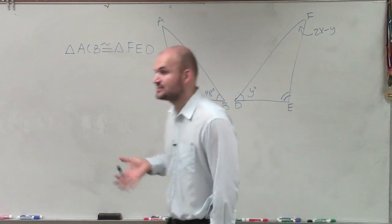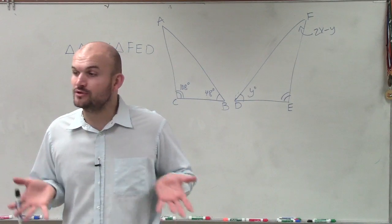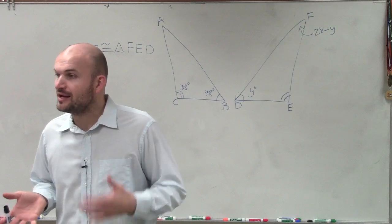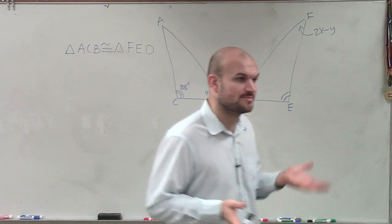Remember, congruent triangles tell us that we have congruent parts. Every angle is equal to the other corresponding angle, and every side measure is equal to the corresponding side measure.